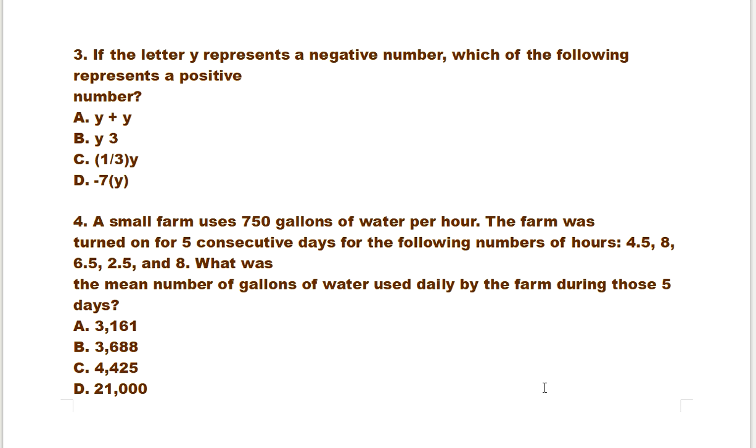Number four question: A small farm uses 750 gallons of water per hour. The farm was turned on for five consecutive days for the following numbers of hours: 4.5, 8, 6.5, 2.5, and 8.